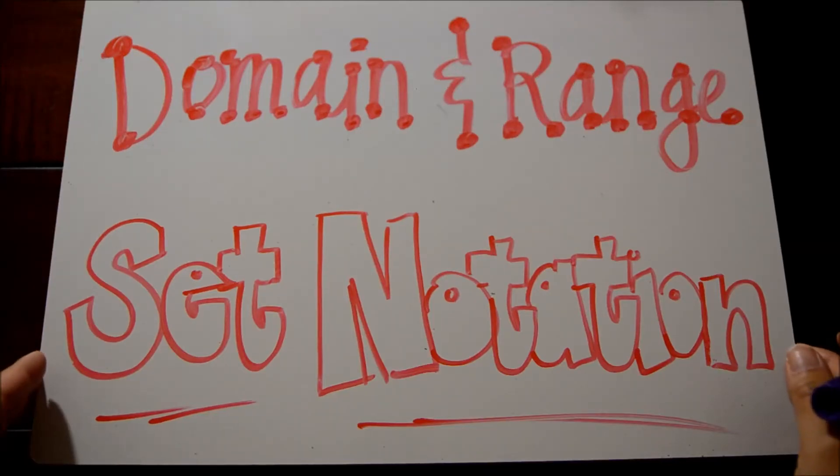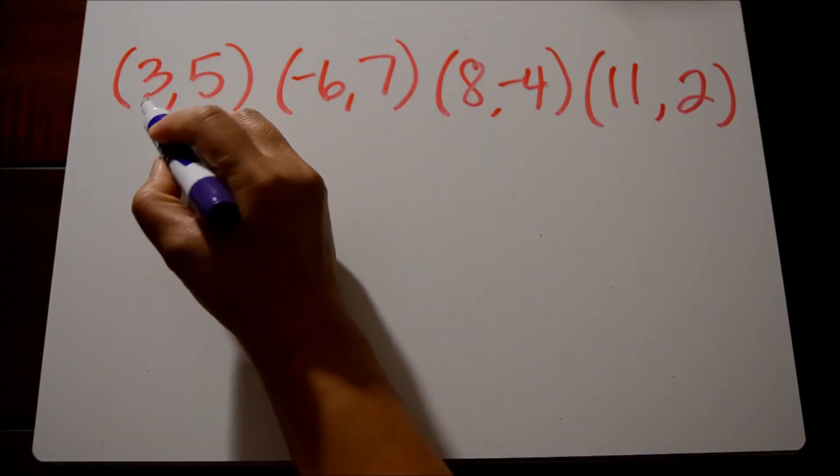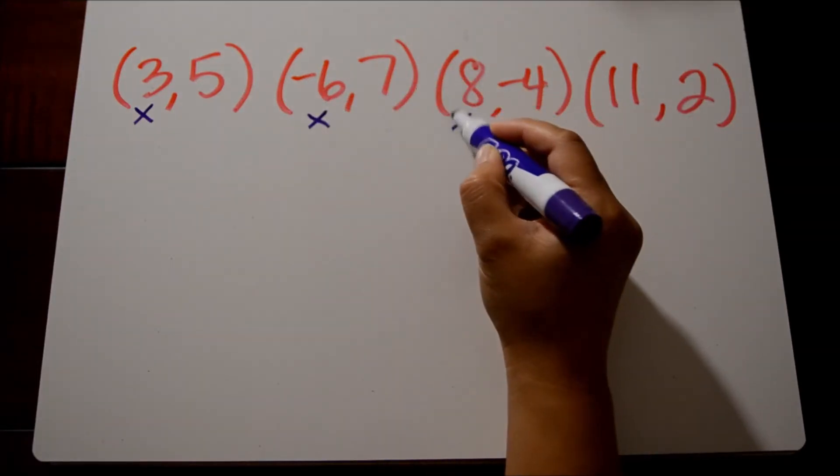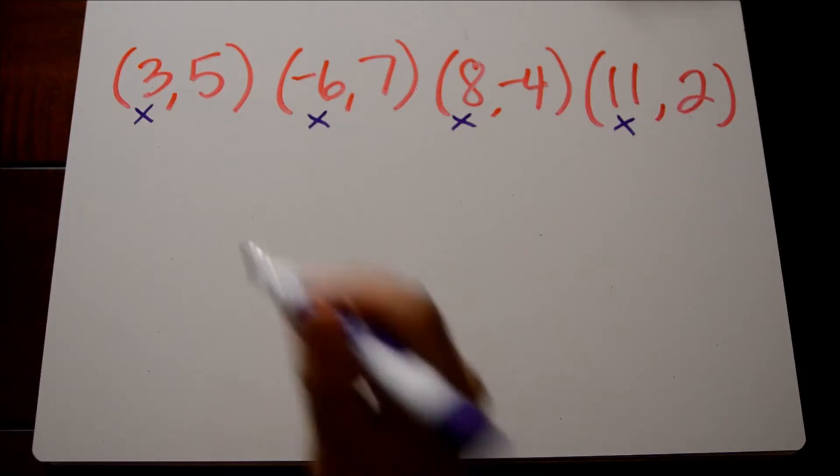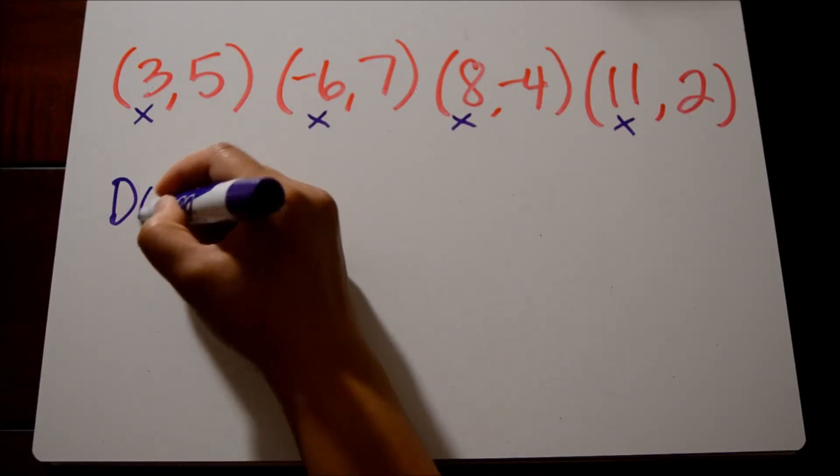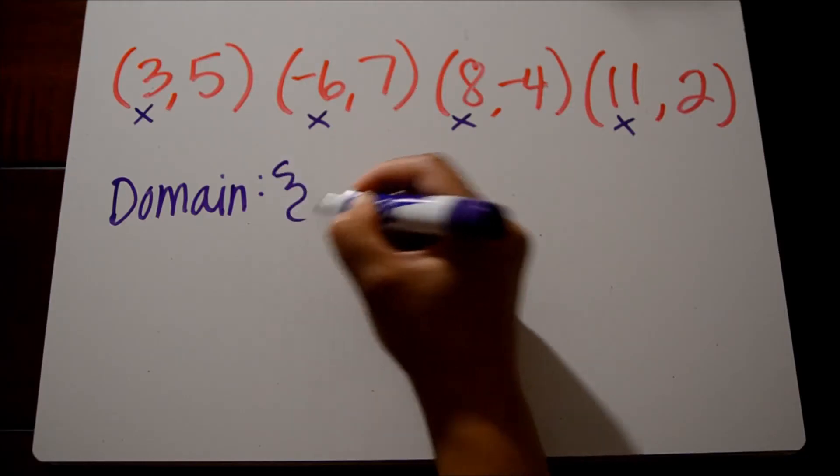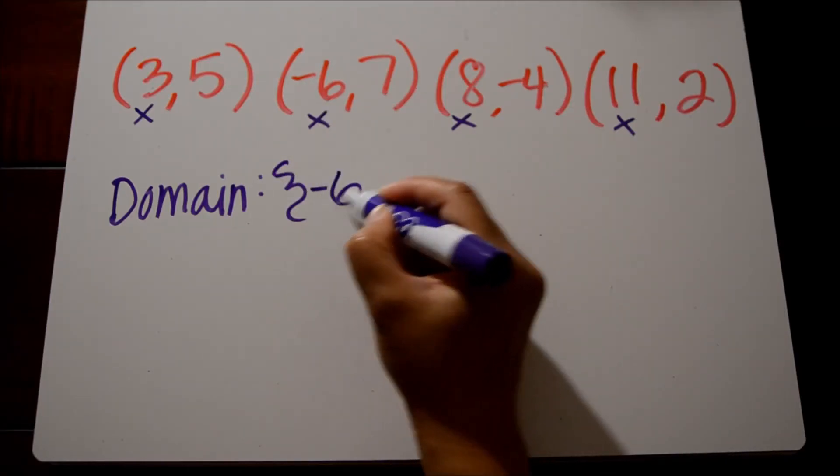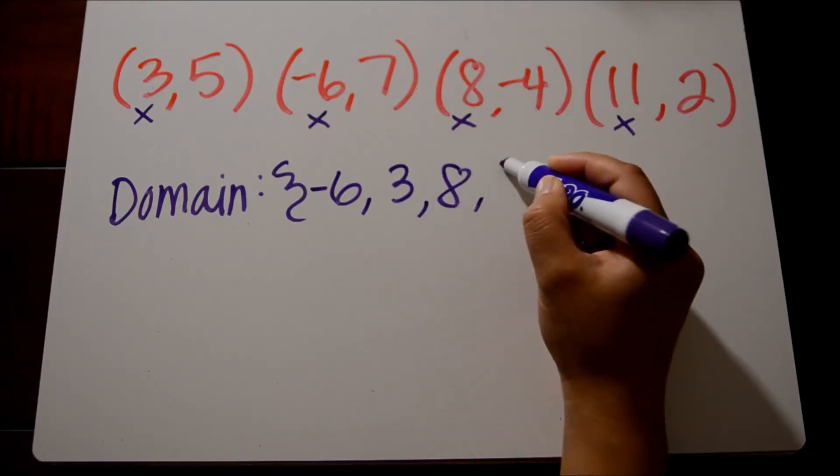Let's take a look at our first example. Here we have a set of ordered pairs, and domain and range describes the x and y values of a relationship. So let's go ahead and label all of our x values for our ordered pairs, and domain and range we write in order from least to greatest. So my domain for this relationship is negative 6, 3, 8, and 11.